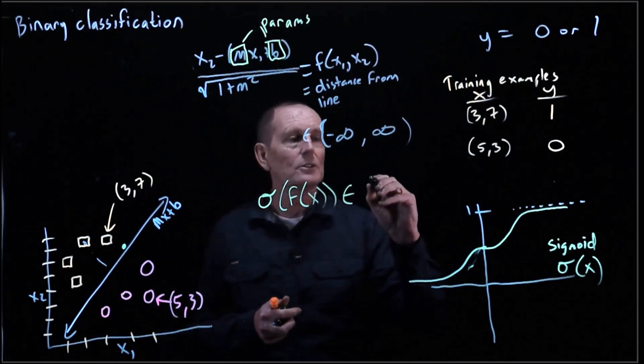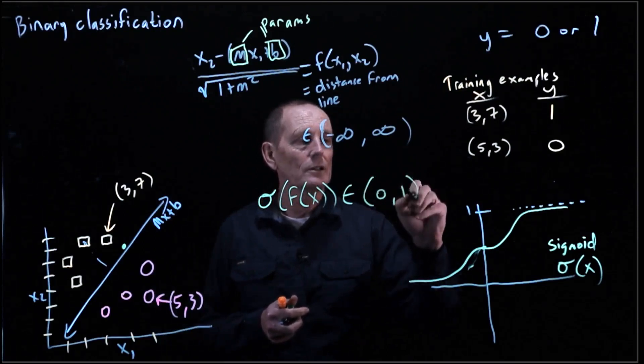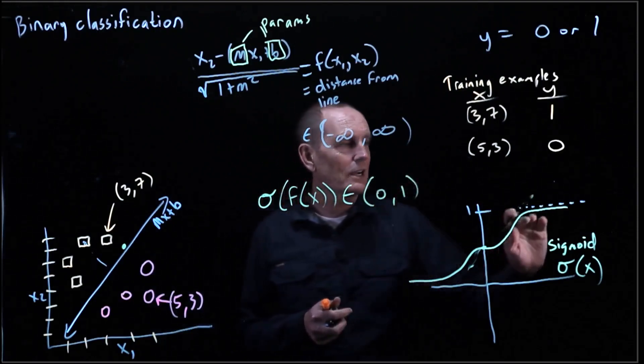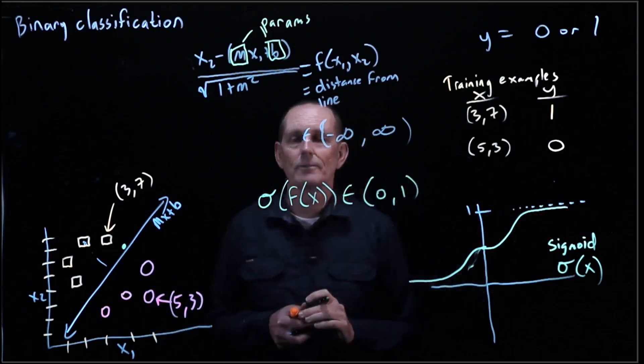So if we take sigmoid of f, so that's going to be in the range 0 to 1. Open-ended because it never actually can reach 1 or never can reach 0.